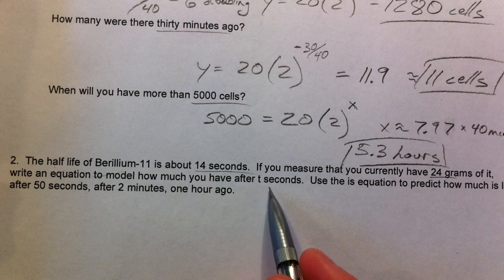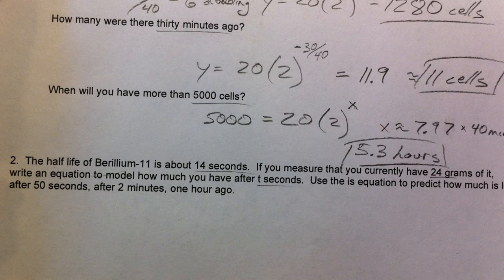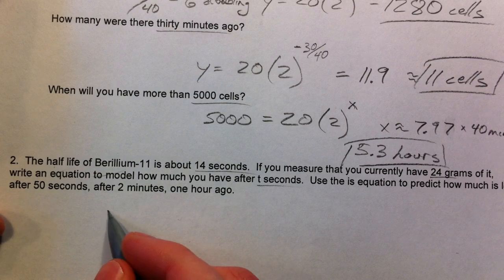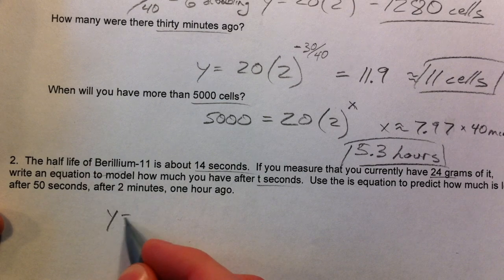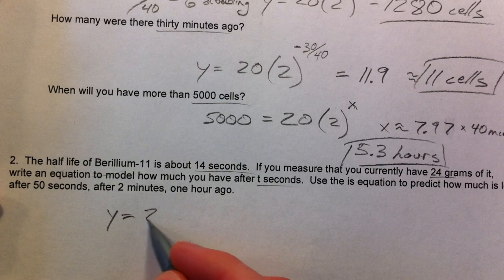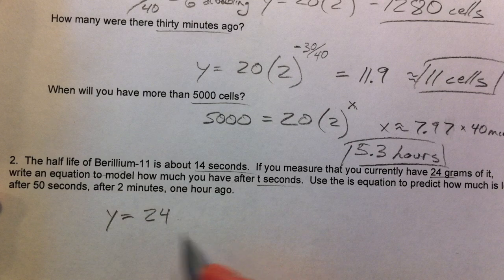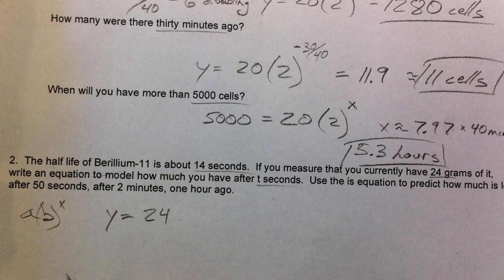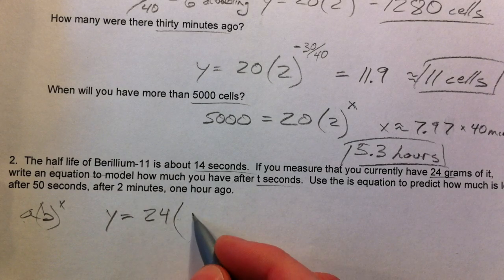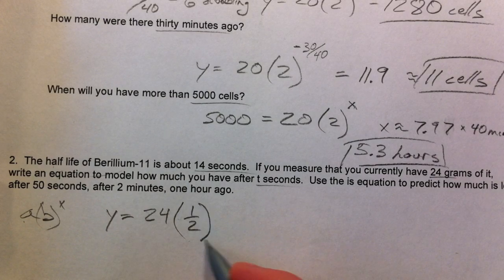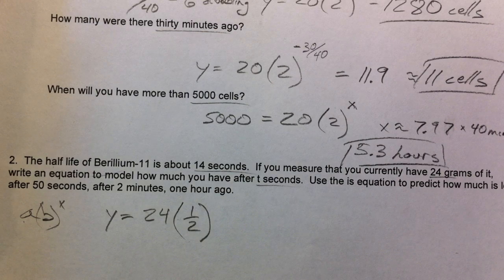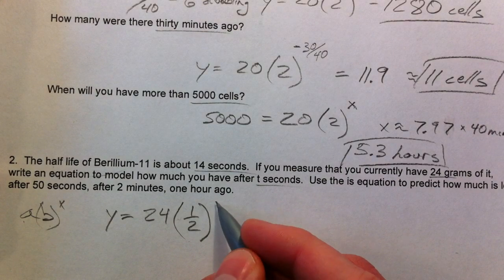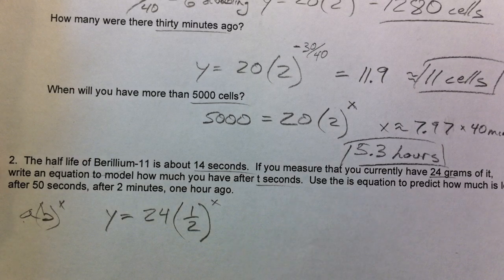y equals some amount we start with, 24. Remember, it's a times b to some x power. a is always the starting value, b is always our multiplier, and we want it to be half as much. It's going to be half as much some x amount of time.